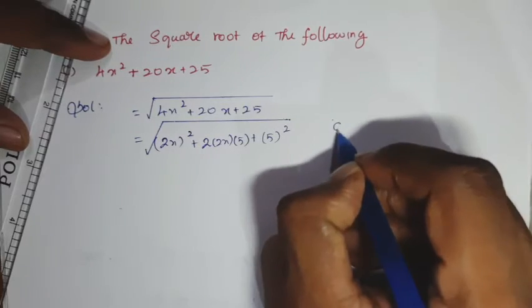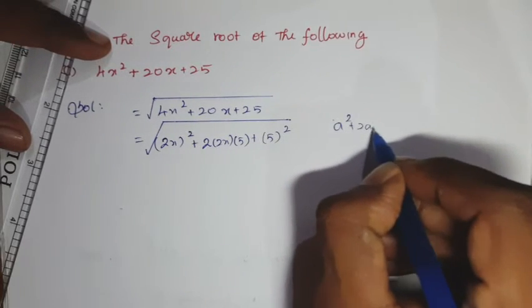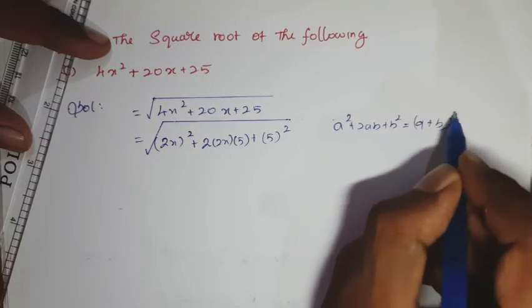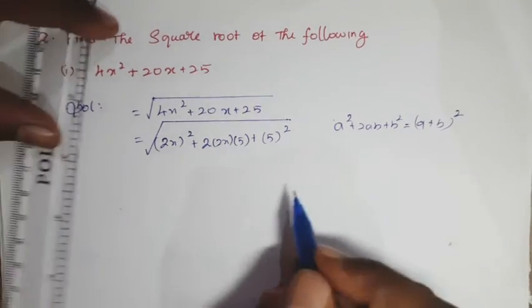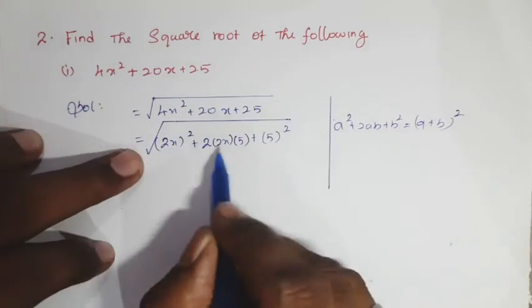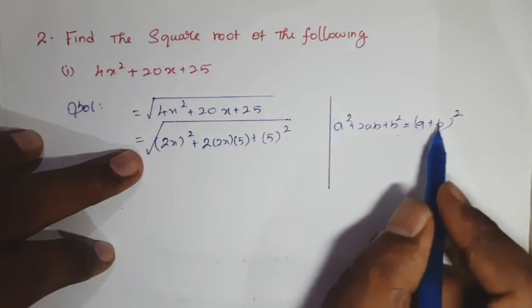The formula is a² + 2ab + b² equals (a + b)². This is the formula we'll use, where a² is the first term, 2ab is the middle term, and b² is the last term.